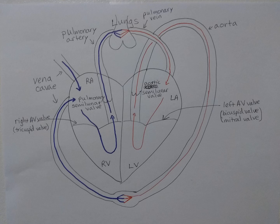Example test questions could include: if blood is sitting in the right atrium, where does it go next? You'd need to answer that it flows through the right AV valve to the right ventricle. Know the complete pathway including all the valves.